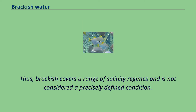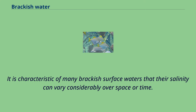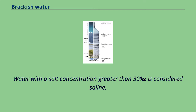Thus, brackish covers a range of salinity regimes and is not considered a precisely defined condition. It is characteristic of many brackish surface waters that their salinity can vary considerably over space or time. Water with a salt concentration greater than 30 parts per thousand is considered saline.